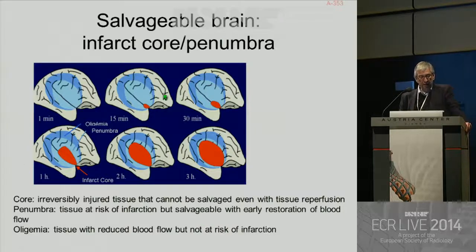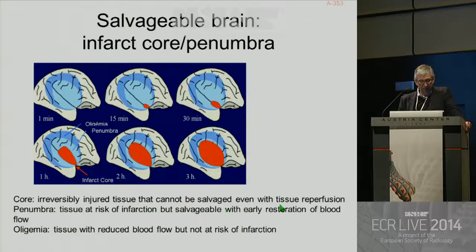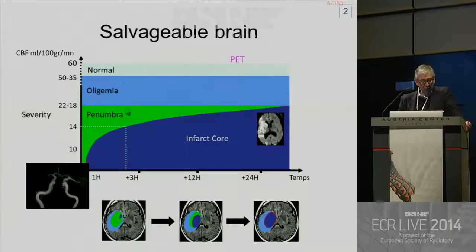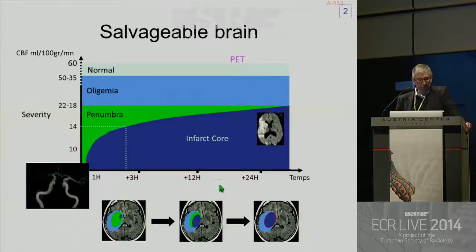Salvageable brain: infarct core and penumbra. The core is irreversibly injured tissue that cannot be salvaged even with tissue reperfusion, and penumbra is tissue at risk of infarction but salvageable with early restoration of blood flow. With time going, you have an increase of the infarct core and a decrease of the penumbra, and the time is very short. At three hours, the penumbra is already reduced, and at 12 hours you still have very little penumbra.